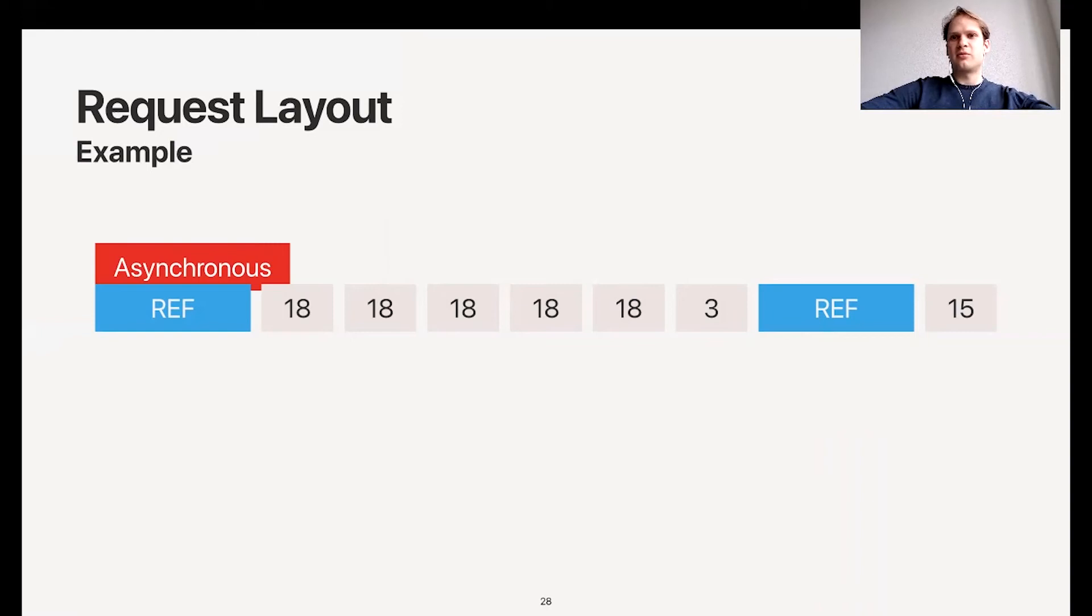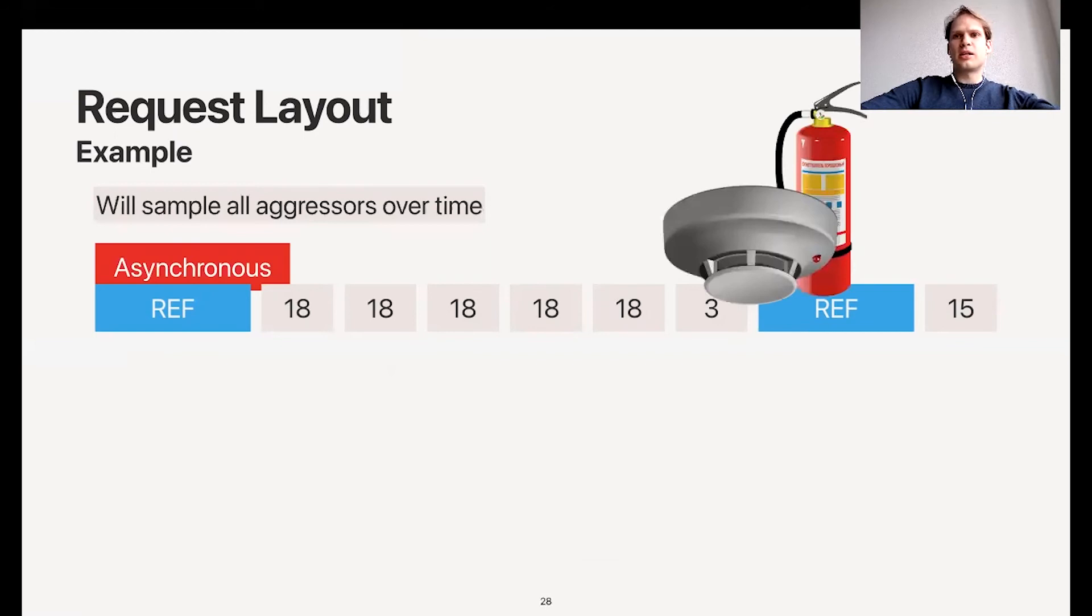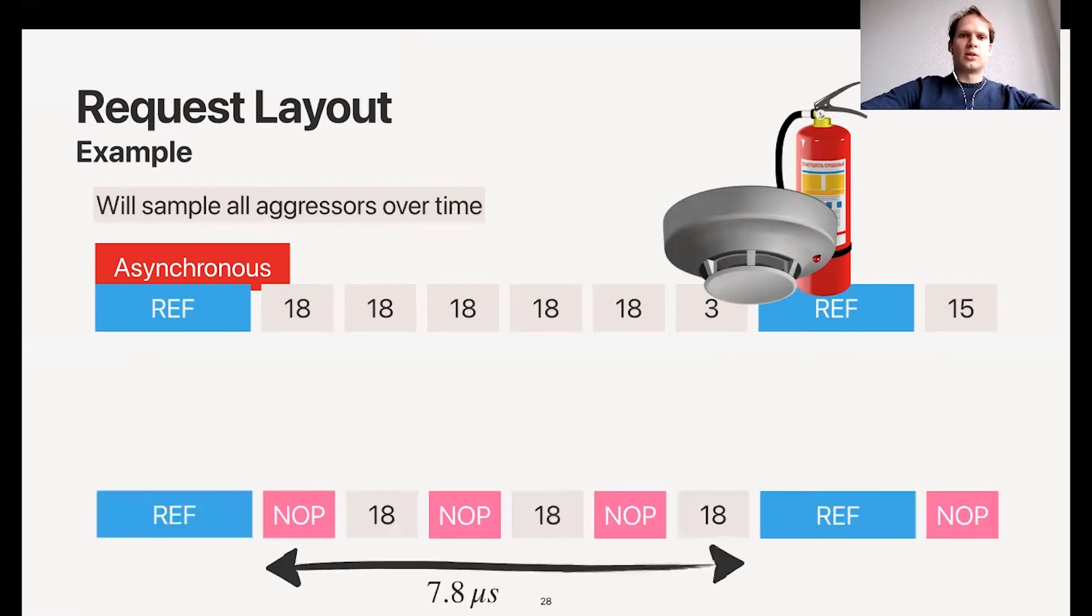As a result, our pattern is basically rotating relative to the refresh command. This is important because we're exposing all our aggressors to the mitigation. We know the mitigation acts around the refresh command and it's deterministic, so by this pattern rotating, it will see all the aggressors at least once.